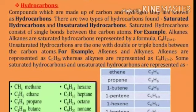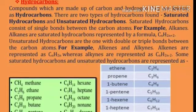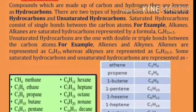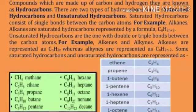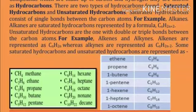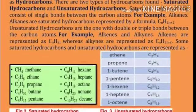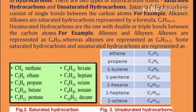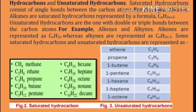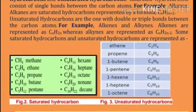Examples of alkenes (unsaturated hydrocarbons): ethene C₂H₄, propene C₃H₆, butene C₄H₈, 1-pentene C₅H₁₀, 1-hexene C₆H₁₂, 1-heptene C₇H₁₄, 1-octene C₈H₁₆.